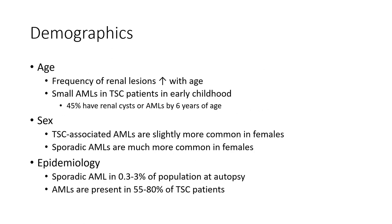Frequency of renal lesions increases with age. Small angiomyolipomas in tuberous sclerosis: 45% of patients have renal lesions or angiomyolipomas by six years of age. TSC-associated angiomyolipomas are slightly more common in females.